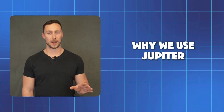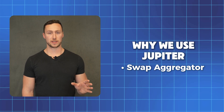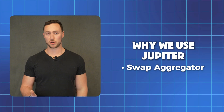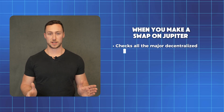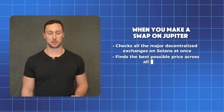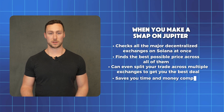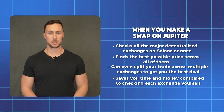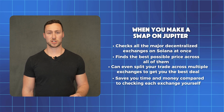Let's walk through making a swap. First, head to Jupiter — link below this video. Jupiter is what we call a swap aggregator. Imagine if instead of checking each airline's website separately for the best flight price, you used a service that checked them all at once, like Kayak — that's Jupiter, but for token swaps. When you make a swap on Jupiter, it checks all the major decentralized exchanges on Solana at once, finds the best possible price across all of them, and can even split your trade across multiple exchanges to get you the best deal. It saves you time and money compared to checking each exchange yourself, and serves as one single interface to access all of them.